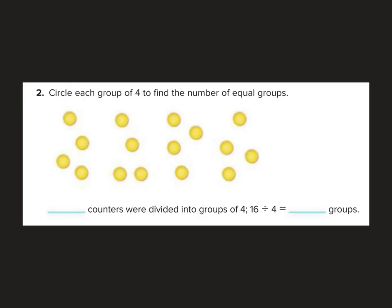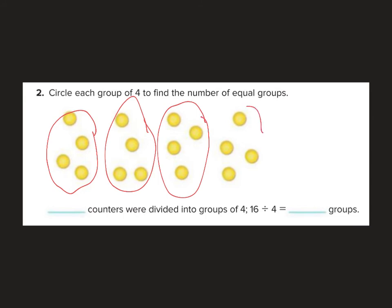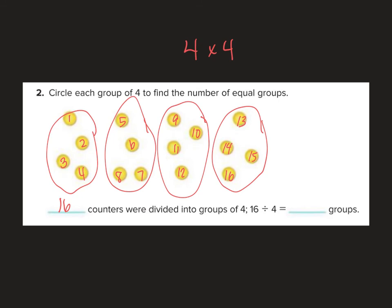Circle each group of four to find the number of equal groups. I'm going to partition the counters into groups of four: one group of four, two groups of four, three groups of four, four groups of four. There are 16 counters total — another way to see this is multiplication: four times four, counting by fours: 4, 8, 12, 16. So 16 counters were divided into groups of four. 16 divided by 4 equals 4 groups.